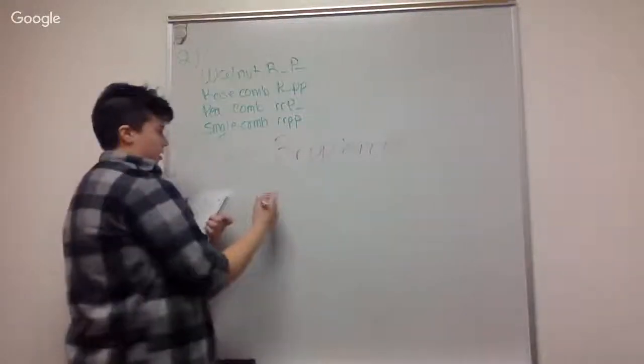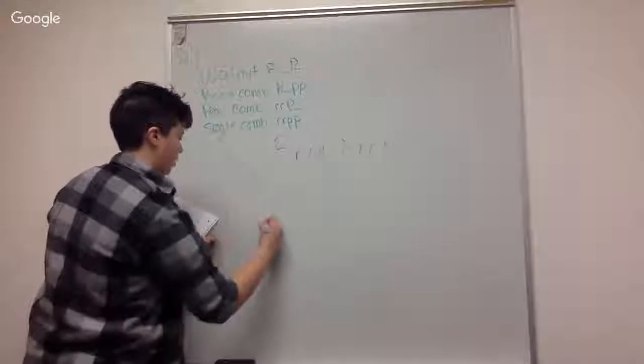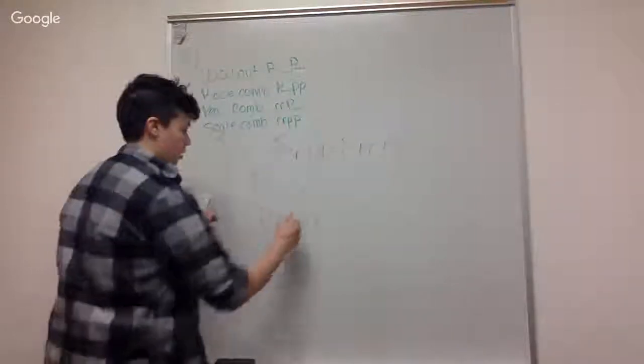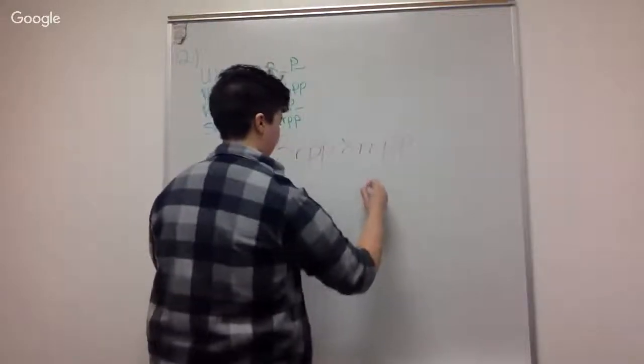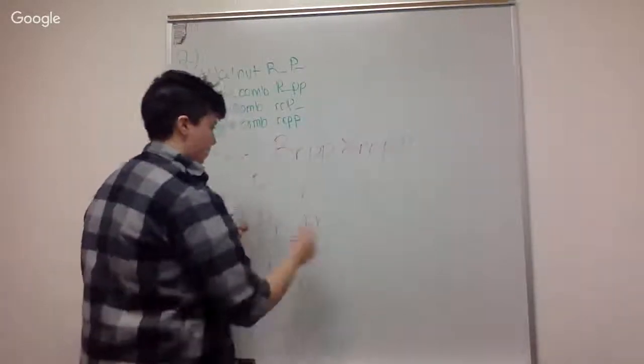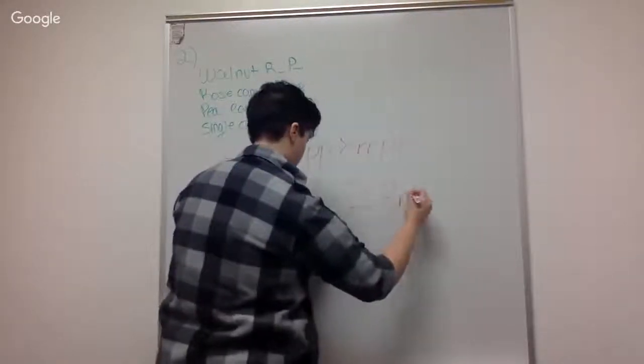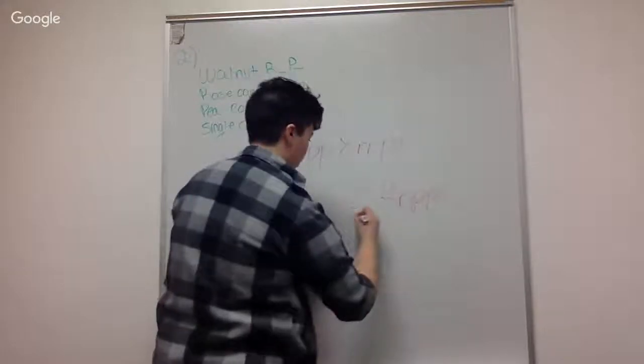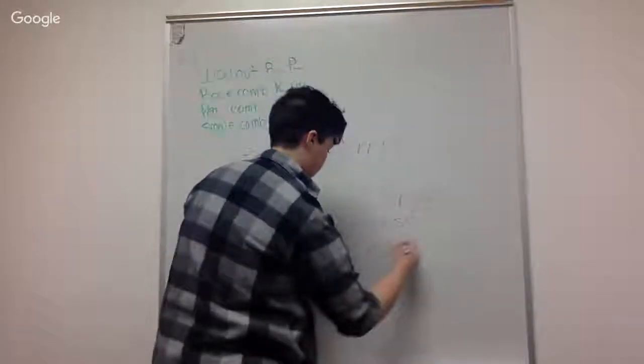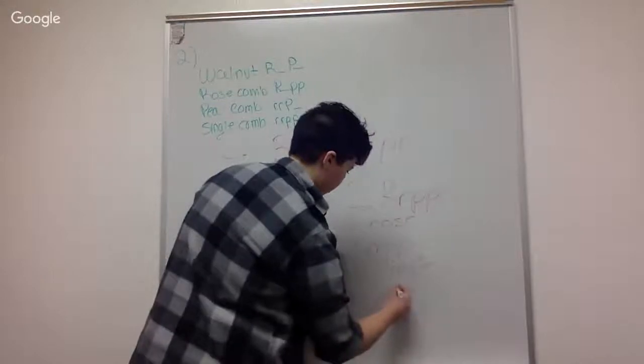I'm just going to show this through Punnett squares. And then the peas don't matter because they're all going to be little peas anyways. So we would get two heterozygous R's with little peas which would equal our two roses, and then two recessive R's with recessive peas which would be our two singles, which would give us our one-to-one ratio for our rose to single.